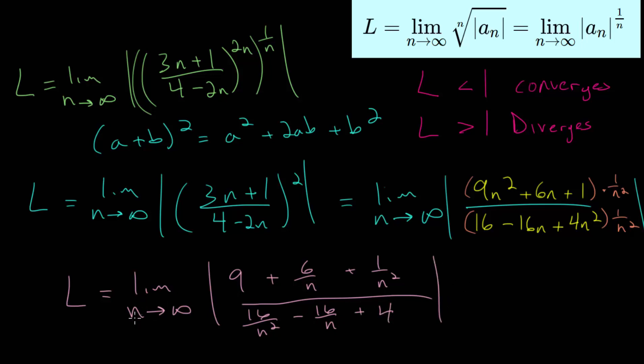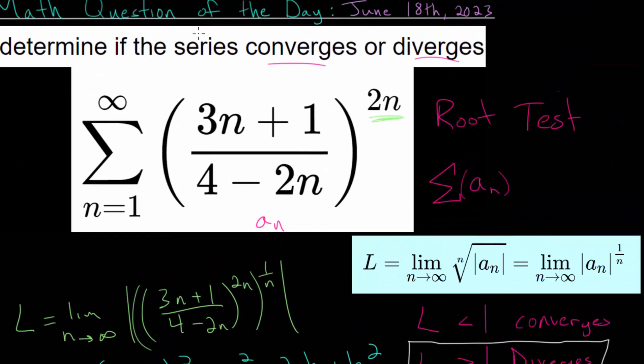And as we let n approach infinity, for the expressions with some power of n in the denominator, these terms will all go to 0. Since the denominator is getting bigger and bigger, but the numerator is fixed. So the overall fraction will get smaller and smaller. These will all approach 0 in the limit. So this would simplify to the absolute value of 9 over 4. But that, of course, is just 9 fourths. And since our limit, 9 fourths, is bigger than 1, we know that this series diverges based on the root test. So our final answer is that this series here diverges.